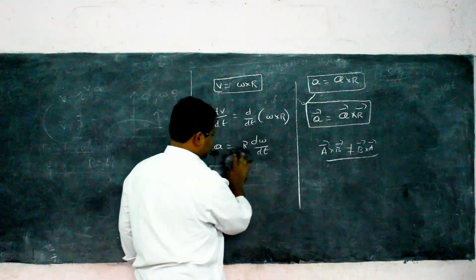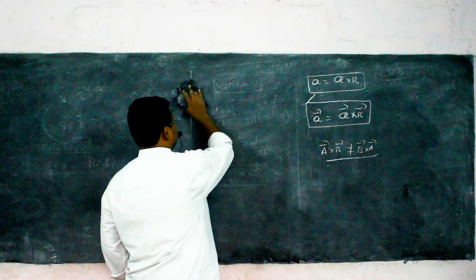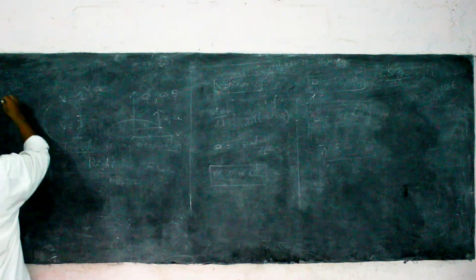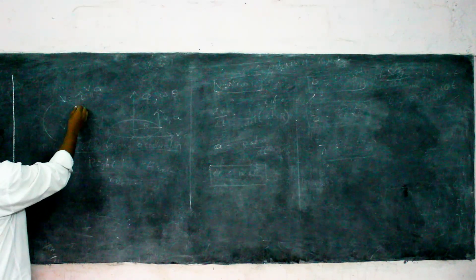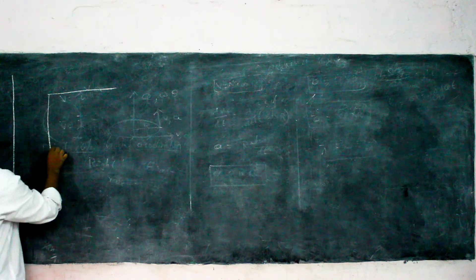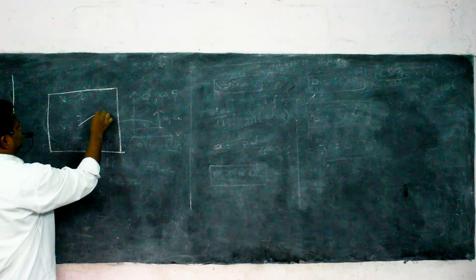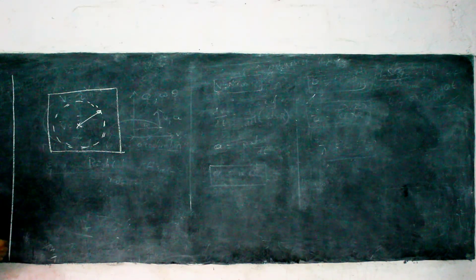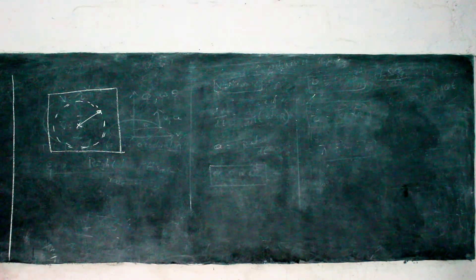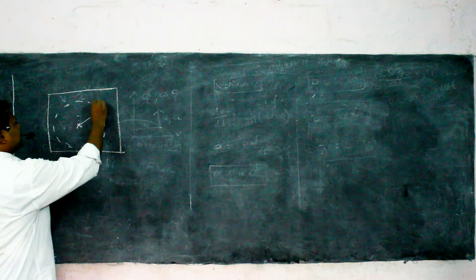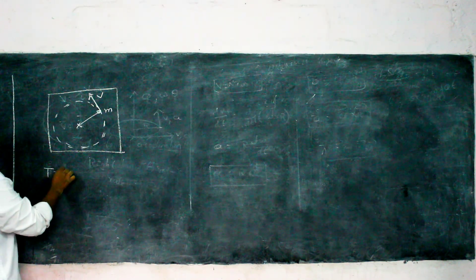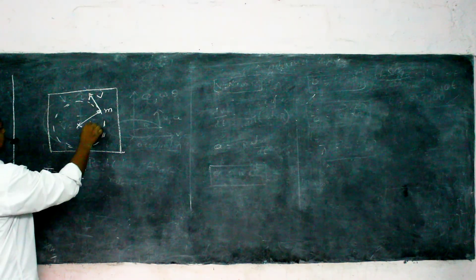Some conditions in which centripetal force is applied: On a horizontal table, if we tie a thread at the center and rotate an object, tension in the thread provides the centripetal force. So T = MV²/R, where R is the radius of the circular path.